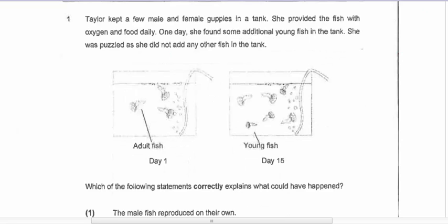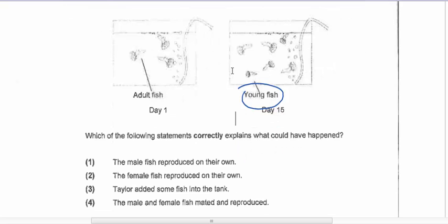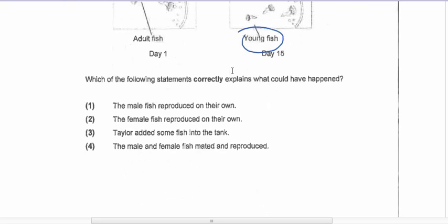Taylor kept a few male and female guppies in a tank, provided the fish with oxygen and food. One day she found some additional young fish in the tank. She was puzzled because she didn't add any other fish. The question asks which statement correctly explains what could happen. Obviously, the male and female fish are going to mate and reproduce.